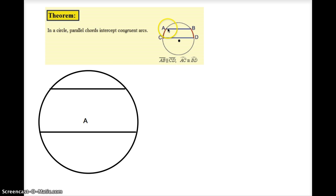then I know that arc AC is going to be congruent to arc BD, which makes sense. Let's take one more look at that.